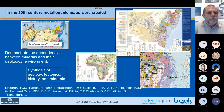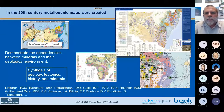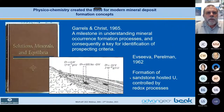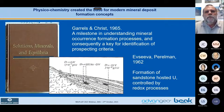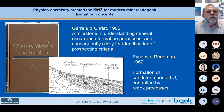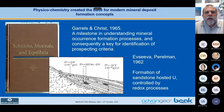Here we can see a few names of this stage of development of the mineral predictive science. Another big step ahead was the formulation of physical-chemical rules on how ore minerals or ore deposits are created. Here we have two names, Scurros and Gris, 1965, the book 'Solutions, Minerals and Equilibria.' And here we have two Russian scientists with an example on how uranium deposits are formed in sandstones on certain geochemical barriers.